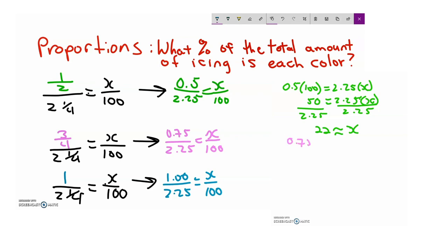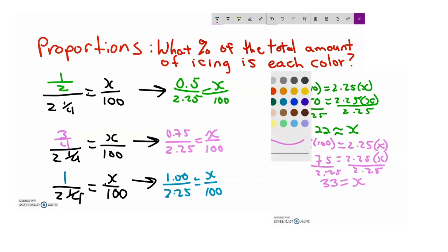For the pink, we have 0.75 times 100. Again, recognize that this is kind of like a pattern, because we just did this for the green. Now we're doing it for the pink. We multiply 2.25 times x. Again, moving the decimal place over two times, so we get 75 is equal to 2.25x. Once again, dividing both sides by 2.25. To solve for x, we will get approximately 33 equal to x. Remember, 33 is what is going over 100. So 33 over x actually represents 33%.